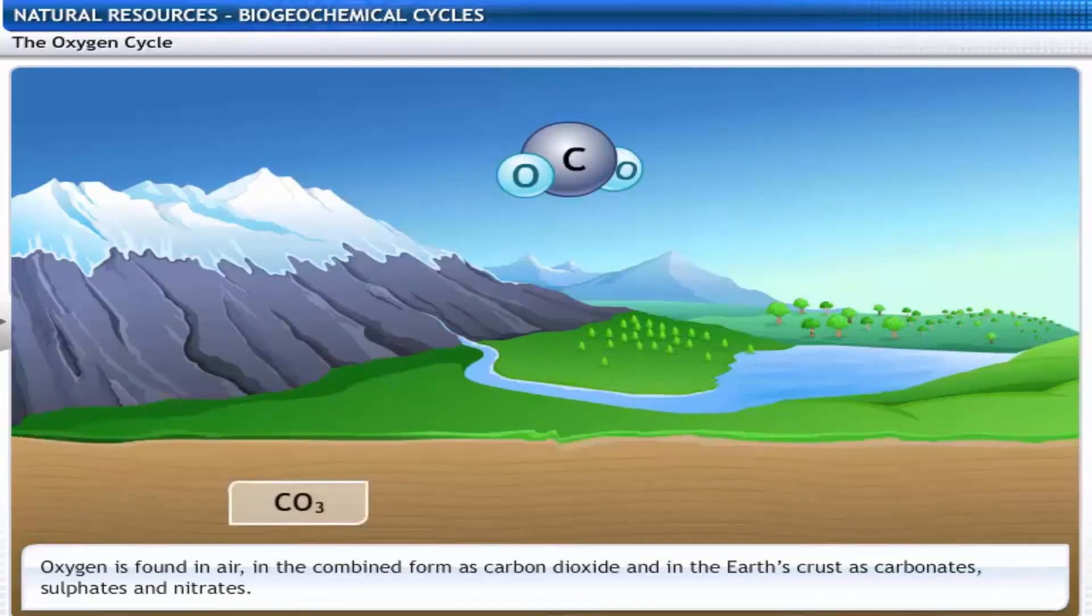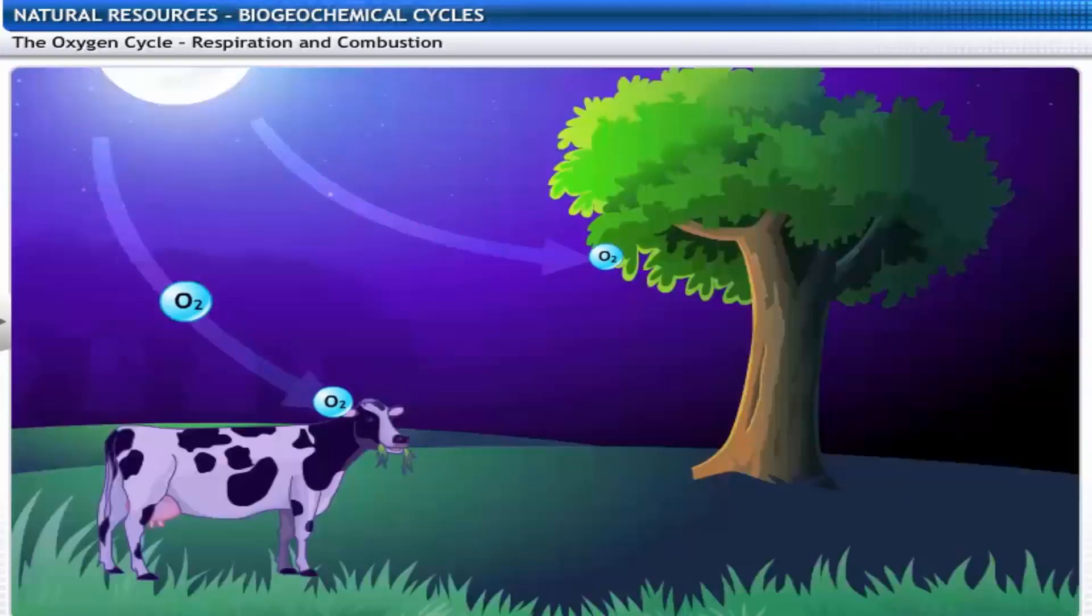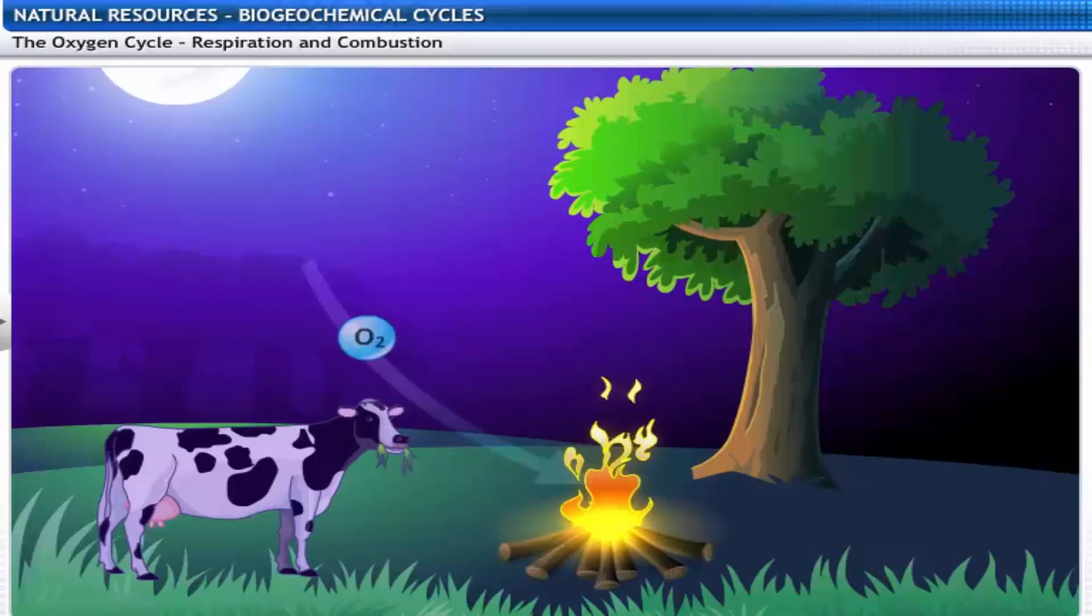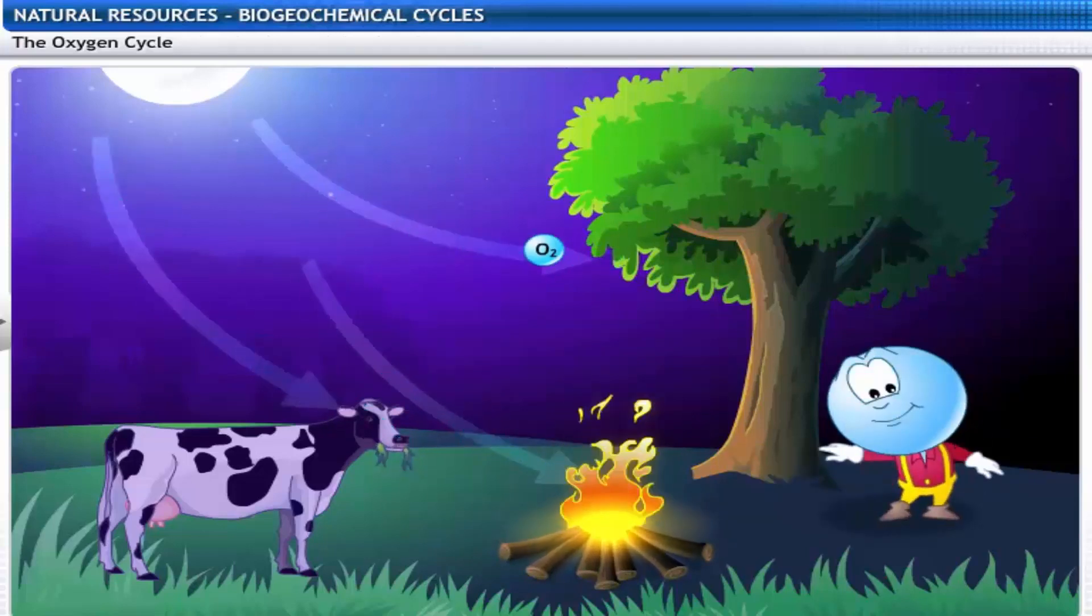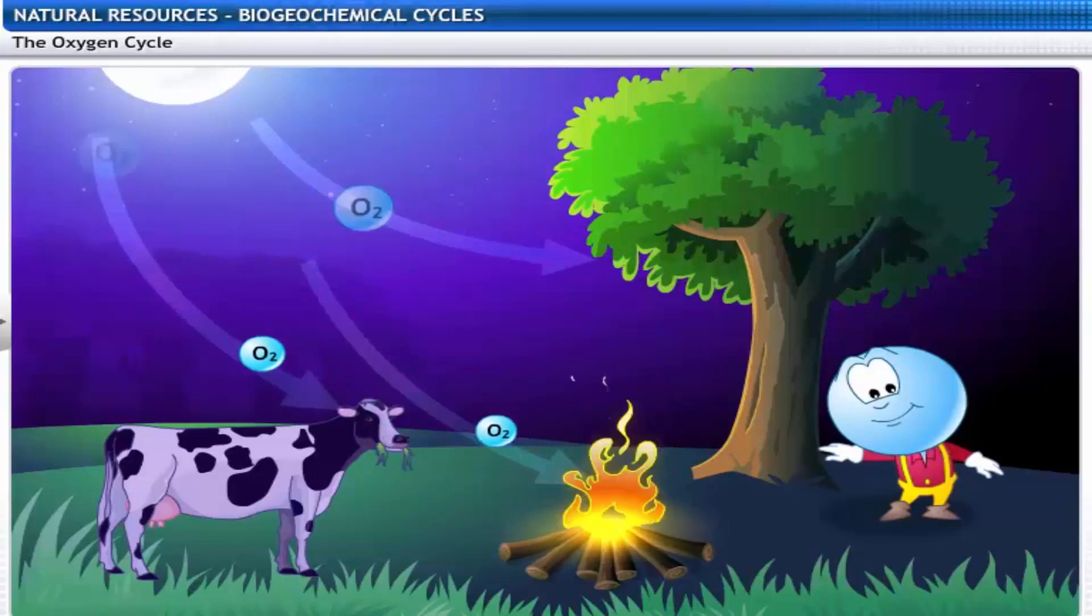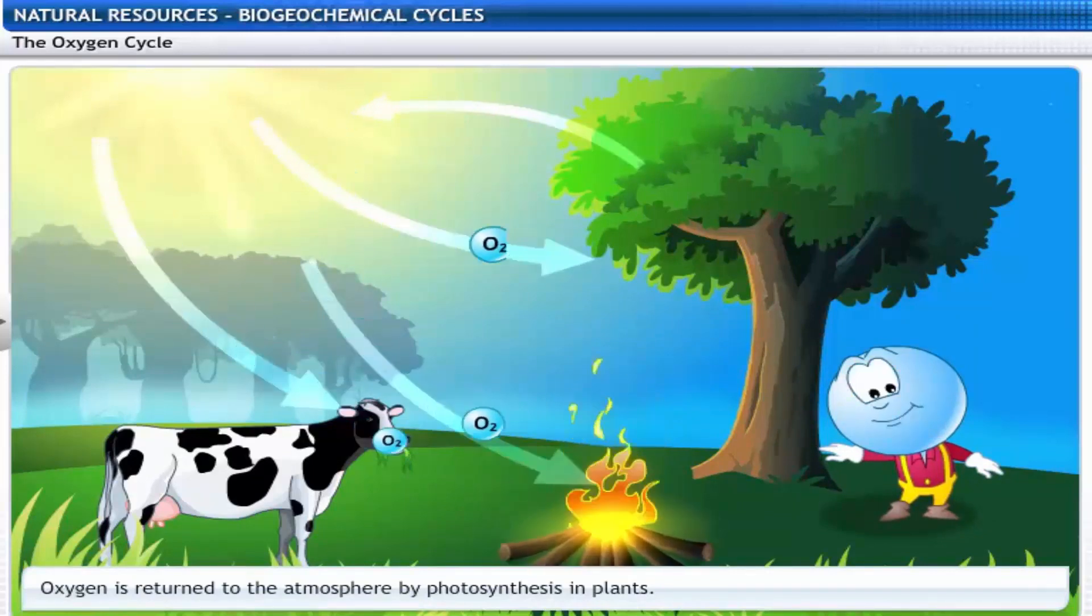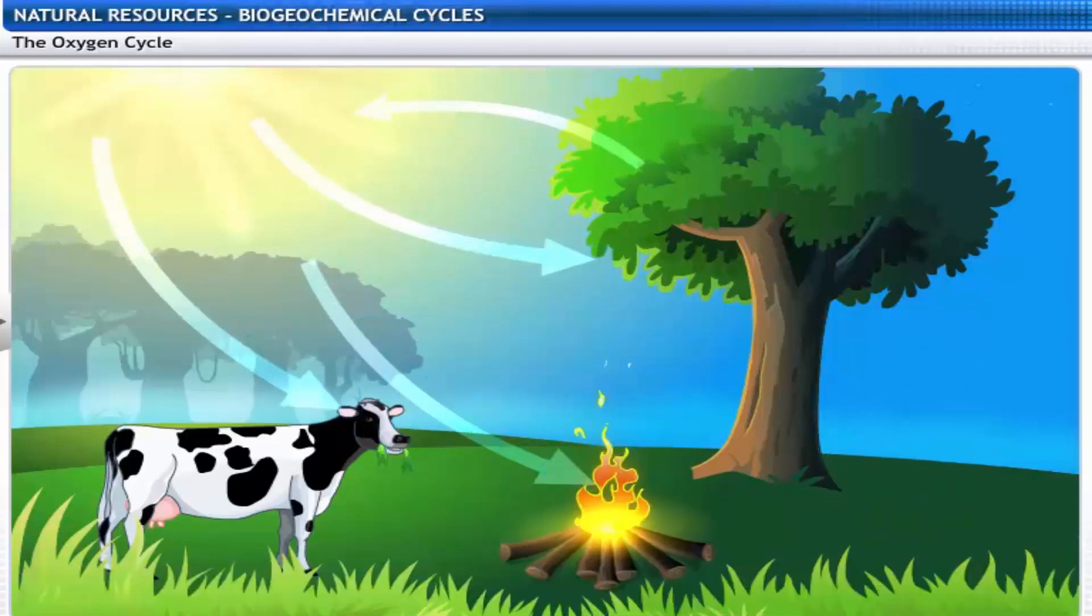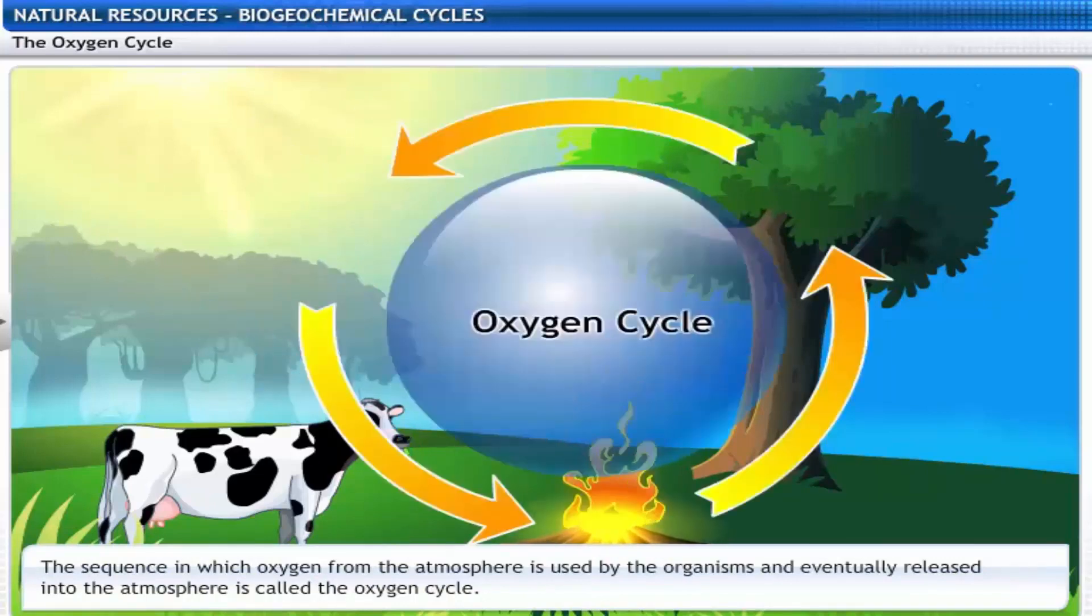Now let's take a look at the oxygen cycle. Here's a detailed look at how the cycle works. Plants and animals use atmospheric oxygen during respiration. Fossil fuels like coal and wood need atmospheric oxygen for combustion. We have seen how oxygen is used from the atmosphere. Can you think of a way in which oxygen is returned to the atmosphere? Take a look. As you know, oxygen is returned to the atmosphere by photosynthesis in plants. Here's another look at the oxygen cycle. The sequence in which oxygen from the atmosphere is used by the organisms and eventually released into the atmosphere is called the oxygen cycle.